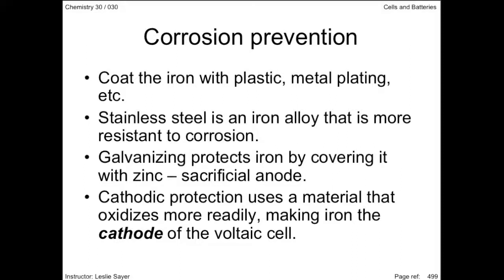You should be aware that simply covering iron with another metal can be occasionally problematic. For example, a tin can is a steel can coated with a thin layer of tin. If scratched, the tin — being a stronger oxidizing agent than iron — becomes the cathode, corroding the iron component of the steel faster than it would if the iron were on its own.